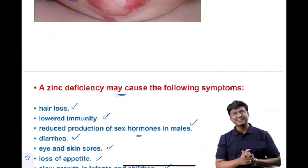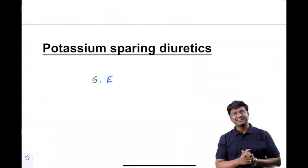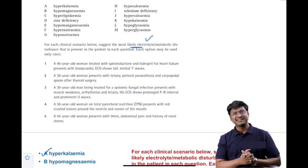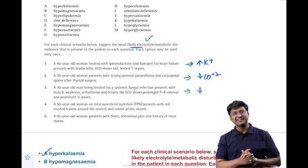In today's INICT revision series, we discussed electrolyte abnormalities across five scenarios: hyperkalemia, hypocalcemia, hypokalemia, zinc deficiency, and hypercalcemia. For more updates, follow the channel — Raj Gubba or Raj Ramya — where you will get daily updates. Thank you very much, and see you tomorrow.